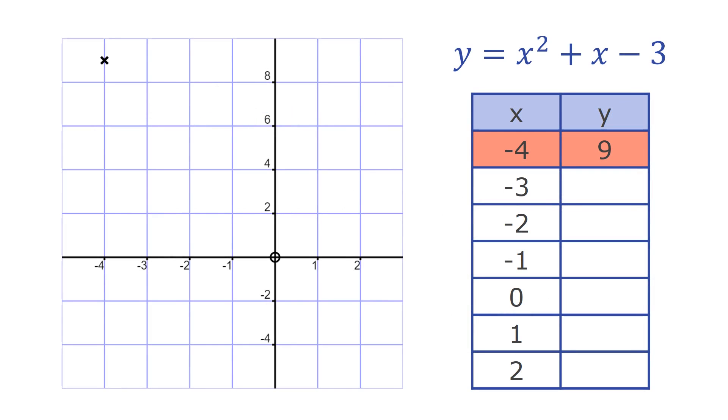So when x equals minus 4, y equals 9. We can plot the point minus 4, 9 on our graph paper.